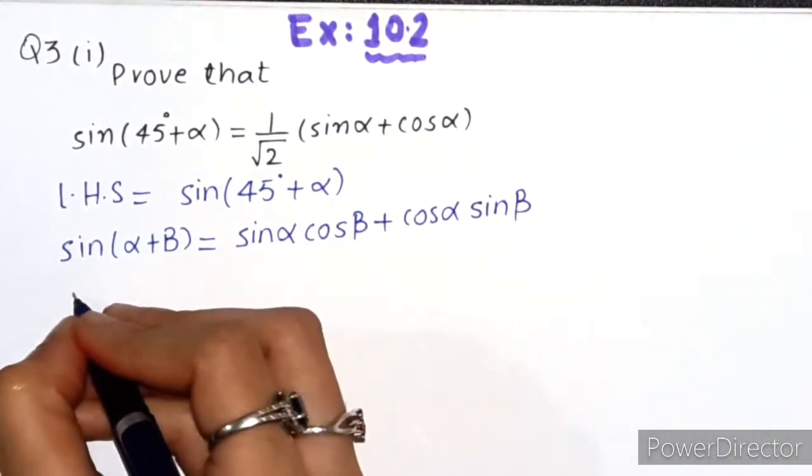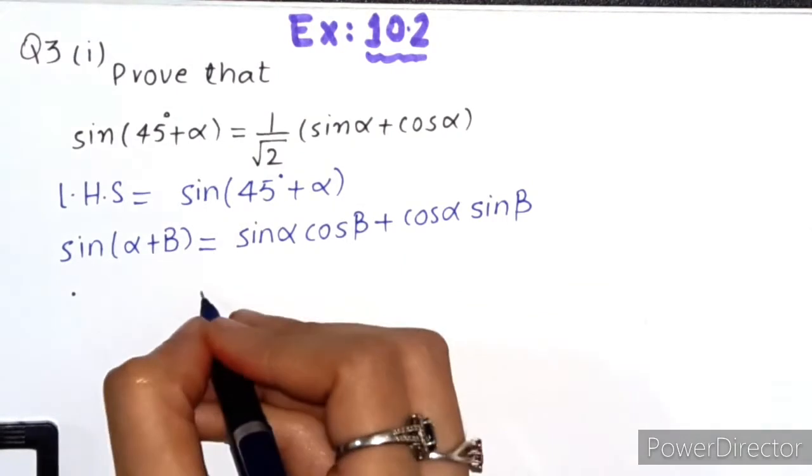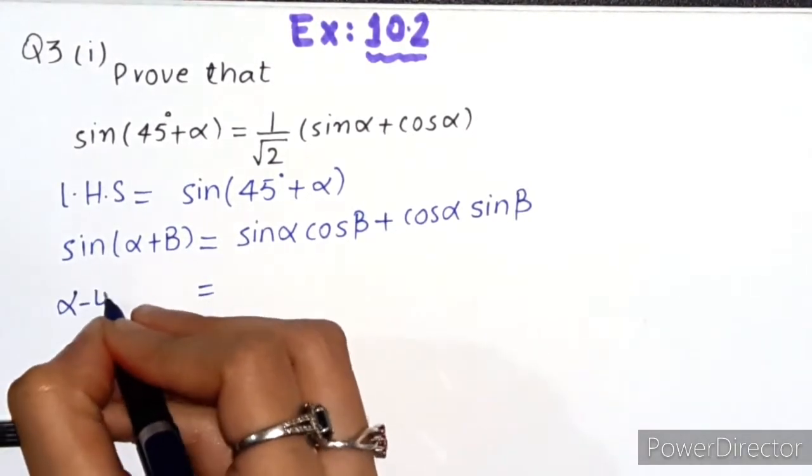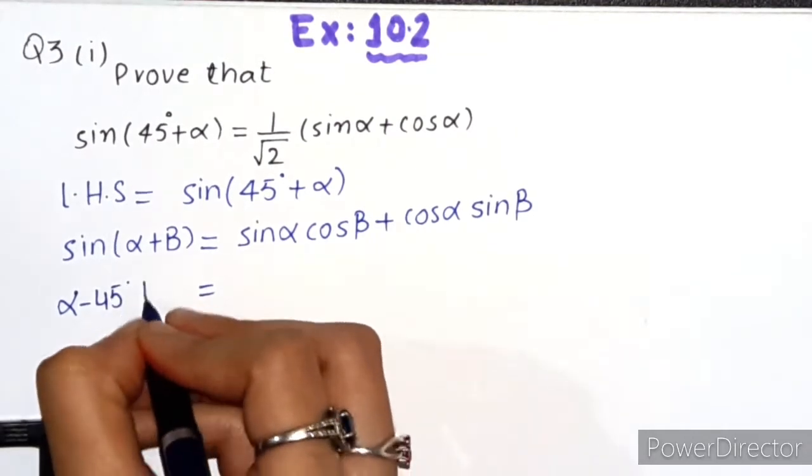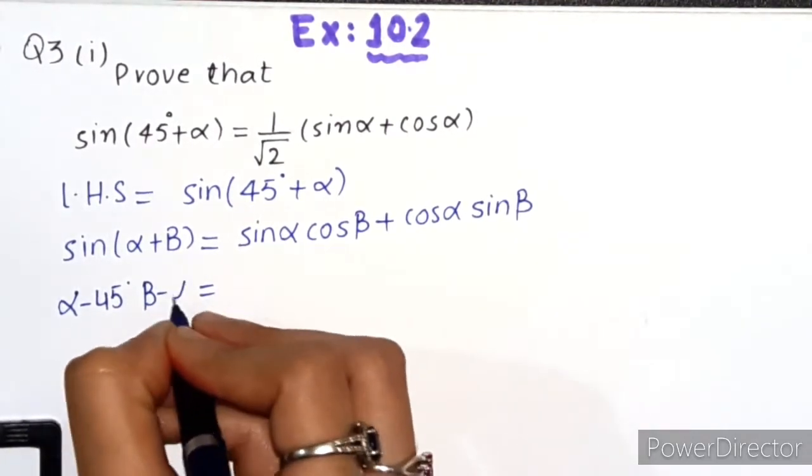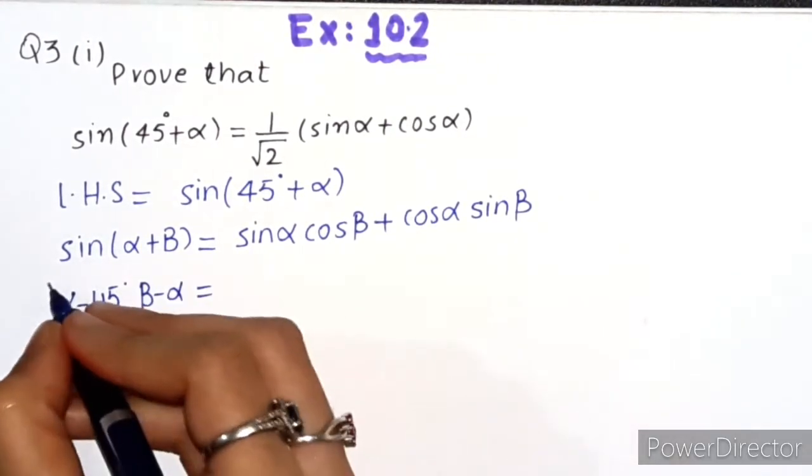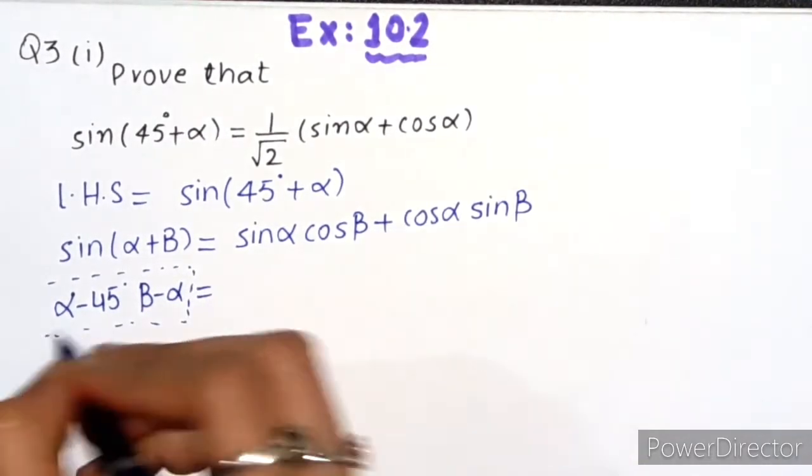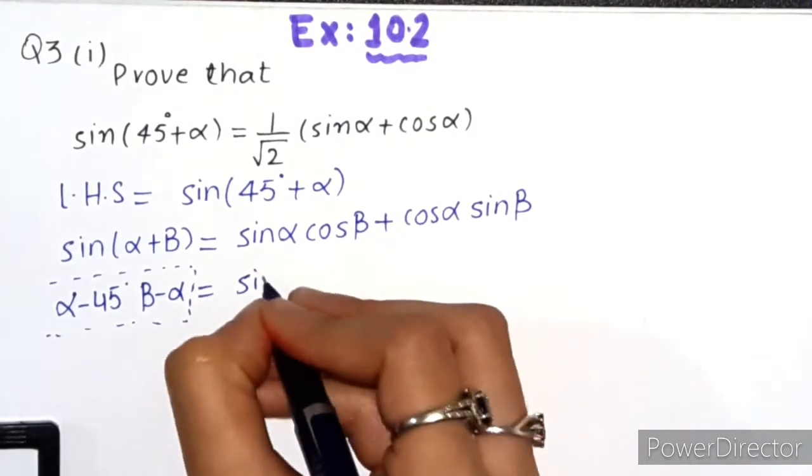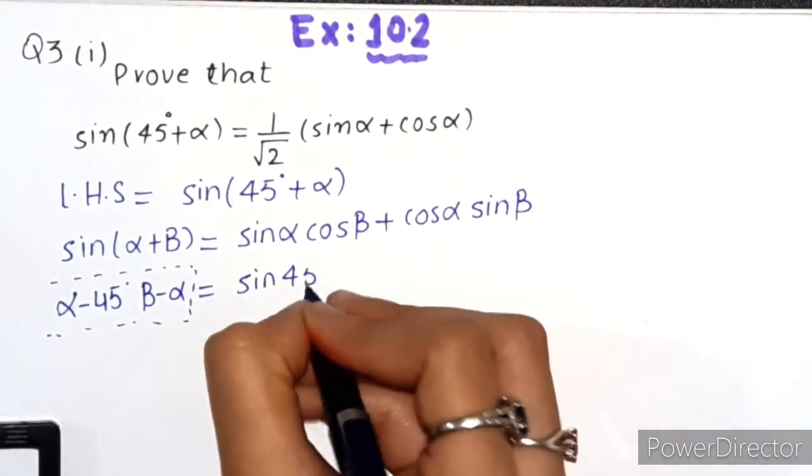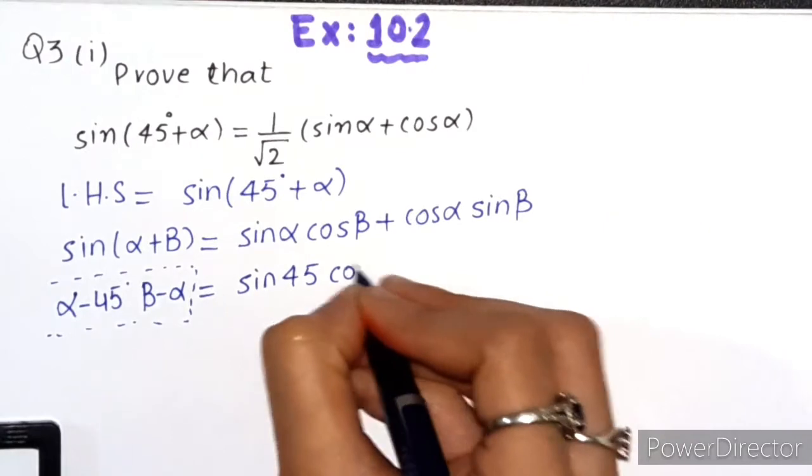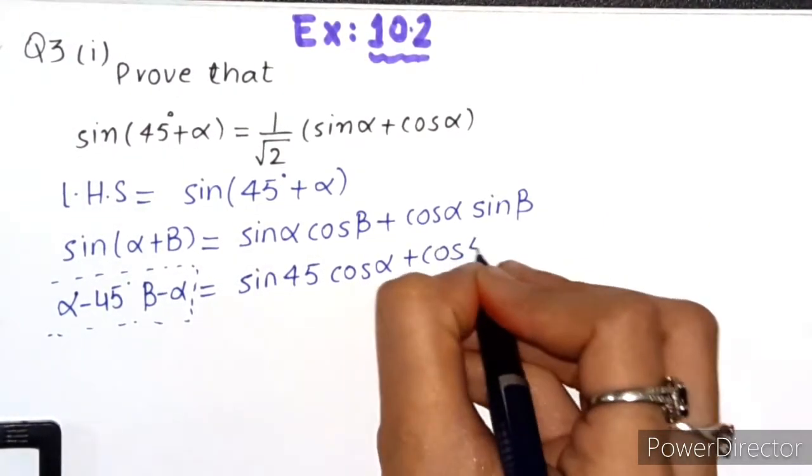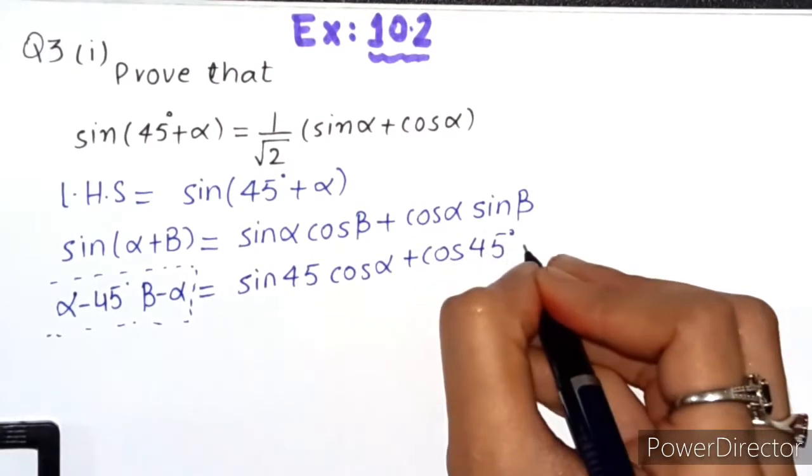Here, we have taken α as 45 degrees and β as α. You don't need to write this down, I'm just explaining. So in place of sin α, we'll write sin 45°, and in place of β we'll write α, plus cos 45° times sin α.